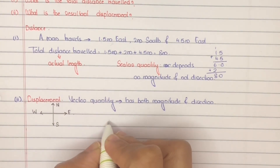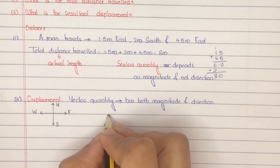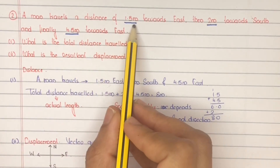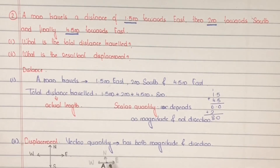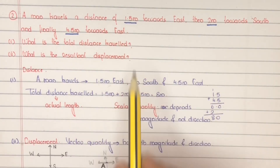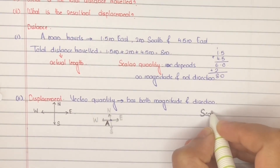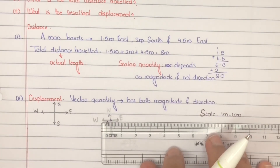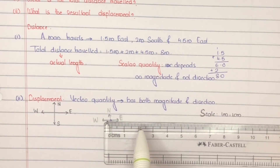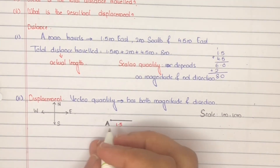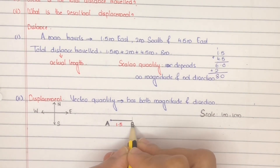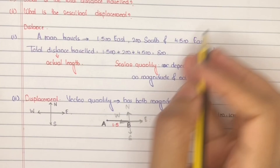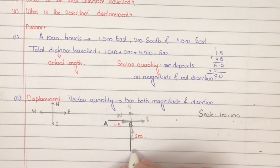As per the question, let us assume the man starts his journey at point A. Mark the direction at point A. The man travels 1.5 meter towards east — east means towards right. We take a scale where 1 meter equals 1 centimeter. Draw 1.5 centimeter towards east; the man reaches point B. Then 2 meter towards south — south means downward. Draw 2 centimeter downwards and mark this point as C.